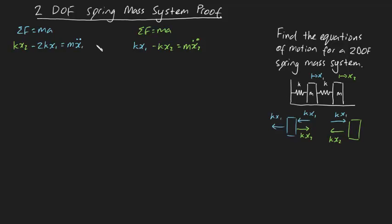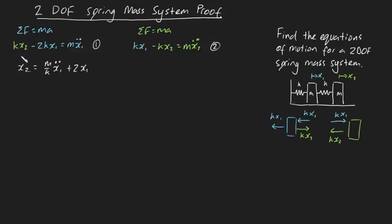Interestingly, we've got two different expressions — equation one and equation two — which we need to solve. Usually you'd plug this into a matrix, but I want to avoid using linear algebra. So what we need to do is make x2 the subject from equation one: x2 is going to be equal to (m/k) x1 double dot plus 2x1. Now I'm going to differentiate this expression with respect to time twice — bear with me, it'll become clear shortly.